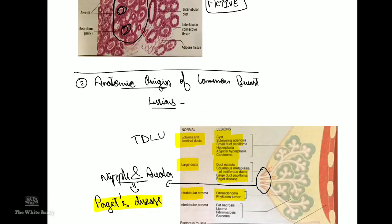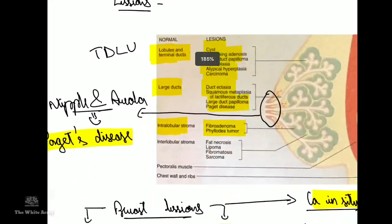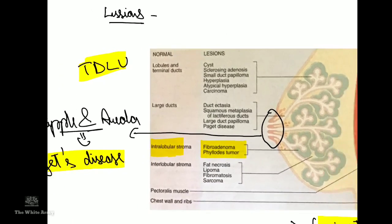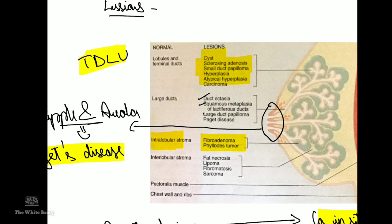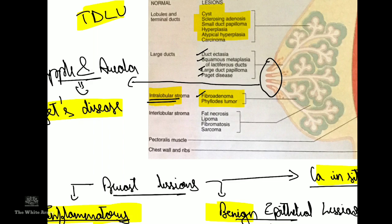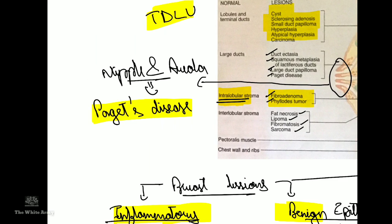From the TDLU — terminal duct and lobular units — arises cysts, sclerosing adenosis, squamous papilloma, epithelial hyperplasia, atypical hyperplasia, and carcinoma. From the larger ducts arises ductal ectasia, squamous metaplasia of lactiferous ducts, large duct papilloma, and Paget's disease. From the intralobular stroma arises fibroadenomas and phyllodes tumor. From the interlobular stroma arises fat necrosis secondary to trauma, lipoma, fibromatosis, and sarcoma. From the nipple and areola arises Paget's disease of the nipple.